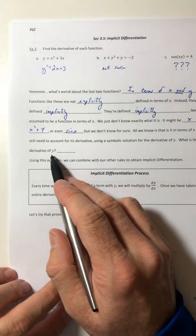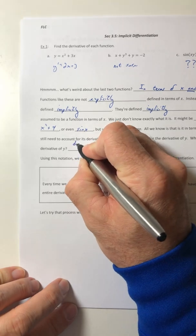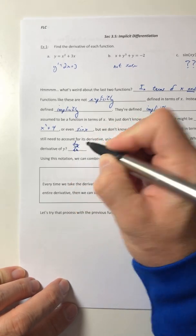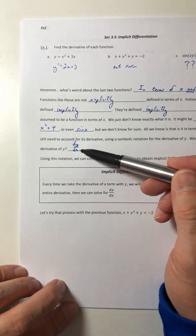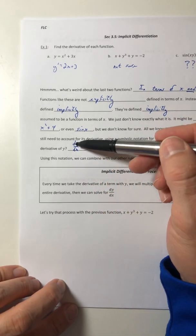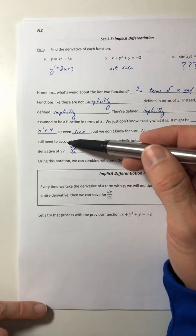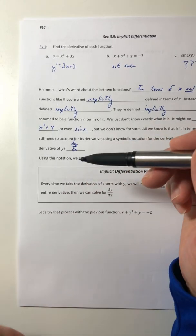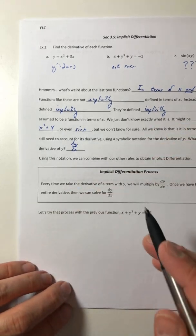But you still need to account for its derivative using a symbolic notation for the derivative of y. So what is the derivative of y? That would be dy dx. So we're going to stick with this notation here. You could also use y prime if you wanted to. But I'm going to stick with dy dx, just because this notation is going to come up a little bit later.